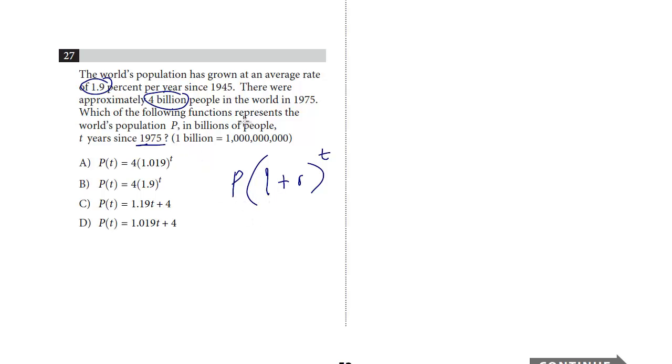We're given in 1975, there were 4 billion. So that's 4. We know that the growth rate is 1.9%, so that's 1 plus, and we've got to convert that into a decimal. 1.9% as a decimal is 0.019. So this is going to be 1.019 when we add it together.